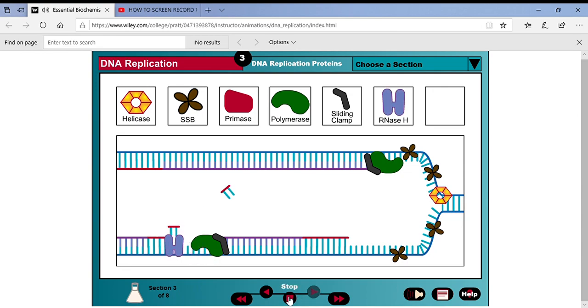RNase H is the next enzyme. Its job is to remove the RNA primer. We don't want mixes of RNA and DNA together. RNA is less stable than DNA nucleotides, so we have to remove the primer and DNA polymerase can now go back and fill in the gaps on both strands. RNase H removes the primer and DNA polymerase will go back and fill in the gaps.